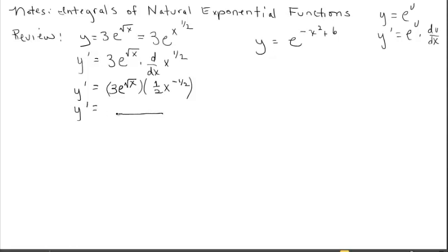Creating a fraction: leave the three on top, the two goes on the bottom, e to the square root of x stays on top, and square root of x — resulting from x to the negative one-half — goes in the denominator. Now let's look at our second example.